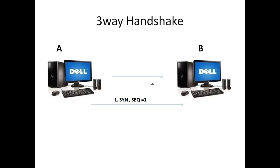Initially, two computers or two hosts are considered to be host A and host B. If they want to communicate with each other using TCP, they need to set up a connection. In TCP, the connection setup process is considered to be a 3-way handshake.